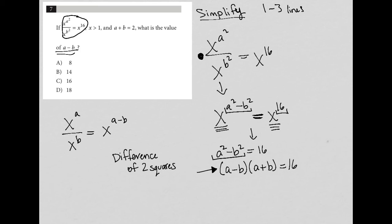So what else do I know? I know that x has to be greater than one. So that doesn't help me at all, because I'm at a stage now where there isn't any x values. And then I know that a plus b equals two. Now that's very helpful, because that means that this here is actually equal to two.